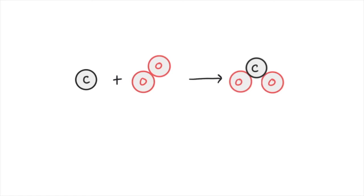Here you can see we've got a carbon atom reacting with a molecule of oxygen, which has two atoms of oxygen, to make one molecule of carbon dioxide. We've got one atom of carbon on the left and one on the right. We've got two atoms of oxygen on the left and we've got two atoms of oxygen on the right.